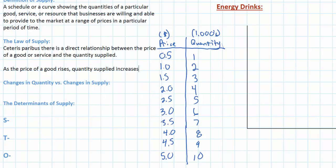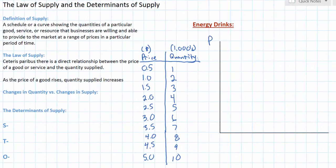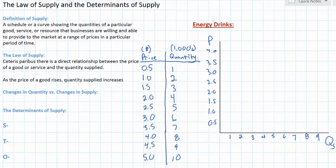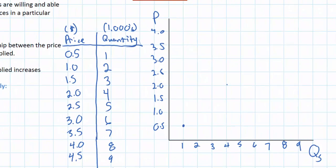We can now create a supply curve from our supply schedule. Let's plot the price of energy drinks against the quantity supplied, putting prices on the vertical axis and quantities on the horizontal axis. To plot our supply curve we put the points from our supply schedule onto the graph. At a price of $0.50, 1,000 energy drinks would be supplied. At a price of $2, 4,000 would be supplied. And at a price of $4, 8,000 would be supplied.